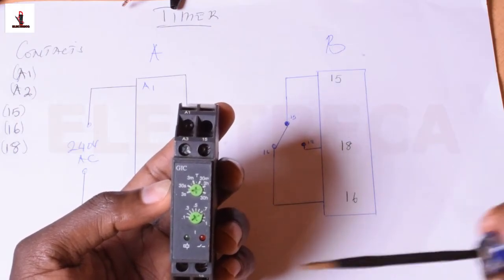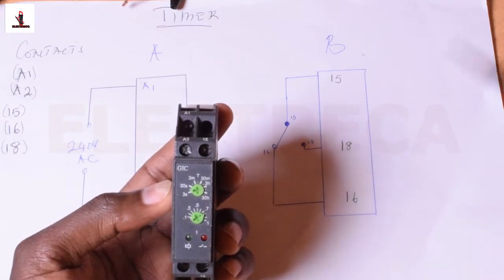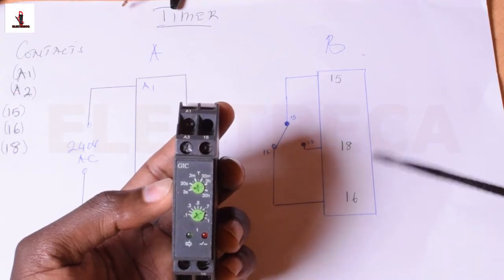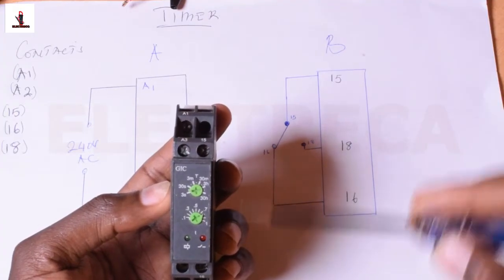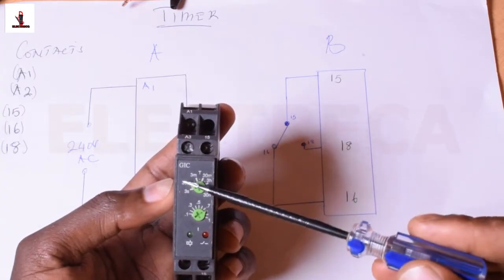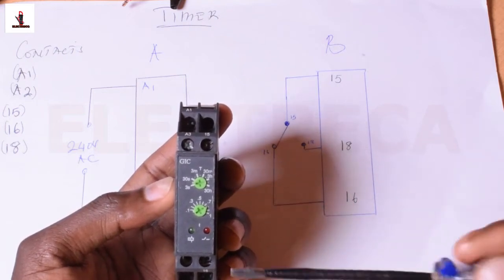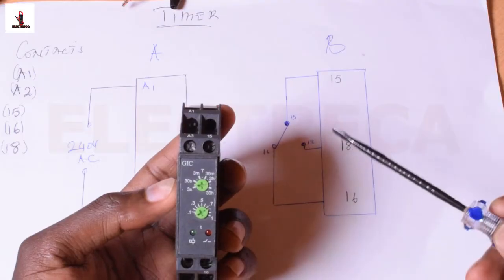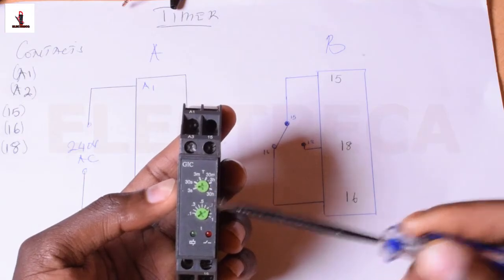You know when the generator starts, it needs at least some few seconds—at least 30 seconds—for it to attain its maximum speed, which will help it to attain its operating frequency. And then also all the parameters, the voltage and things, are all in sequence and okay. So you give it 30 seconds or slightly more; that one is enough for your generator to have aligned all the parameters.